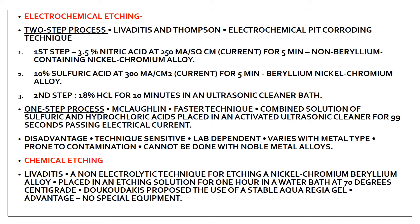Chemical etching was introduced by Levadatus as a non-electrolytic technique for etching a nickel-chromium beryllium alloy. The retainer is placed in an etching solution for one hour in a water bath at 70 degrees centigrade. A modification by Ducoadacus proposed using a stable aqua regia gel instead of the water bath. The advantage of chemical etching is that no special equipment is needed.